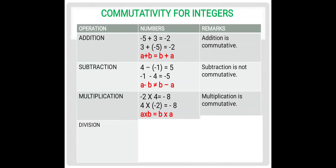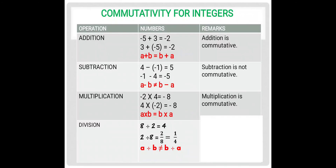Let us now check for division and divide any two integers. 8 divided by 2 equals 4. Let us change the order now: 2 divided by 8 can be written as 2 upon 8. After reducing it to simplest form, we have the answer as 1 upon 4. So when the order of these two integers was changed, the answer has changed. Hence, a divided by b will not be equal to b divided by a for any two integers. Hence, division is not commutative.